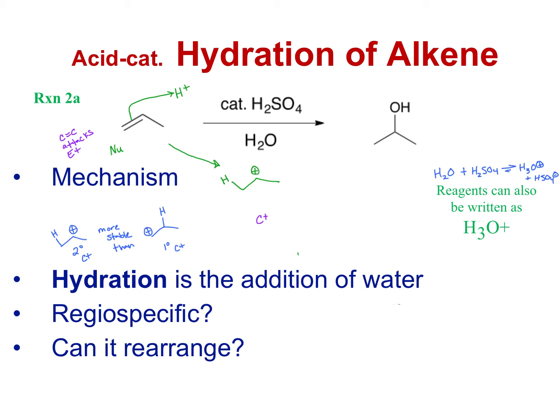Once we get to this point, I always ask: can it rearrange? This particular example cannot, because if it rearranged it would be going to a primary carbocation, which is not going to be more stable. So once I've got my carbocation at its most stable version, the nucleophile can attack. To form the product shown, that nucleophile is going to be the OH from water. We draw a lone pair on oxygen, it attacks the carbon with the positive charge, and we form that bond.